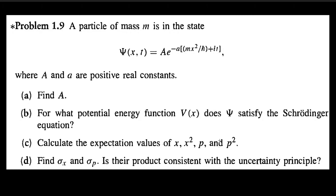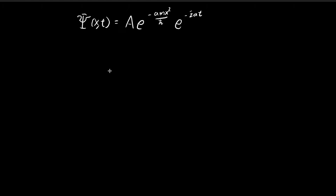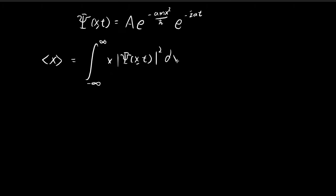In part c, we want to calculate these expected values. So let's start off with the expected value of x. By definition, you integrate from negative infinity to positive infinity of x multiplied by the probability density function. This is by definition the expected value of x.